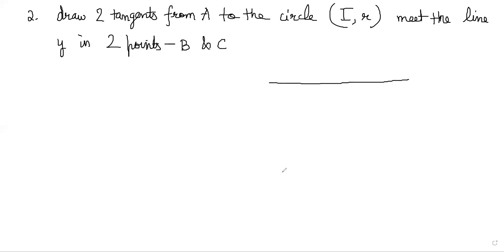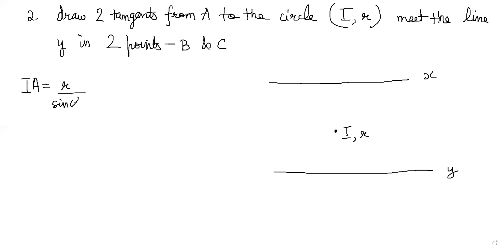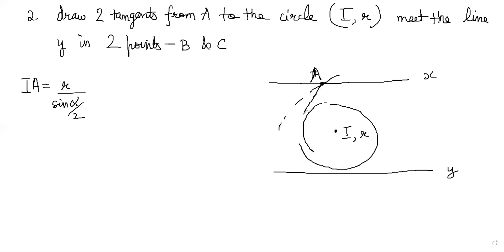So basically, I'll draw the figure again. Two parallel lines were given. One circle was given. You had to first find point A. What you do is: IR was given and alpha was given, so you construct IA as R divided by sine(alpha/2) and make a circle which cuts line X at some point. This becomes A. Once you have A, from A to the circle IR draw two tangents. They will meet line Y here and here. This becomes B and C. This ensures that angle A is alpha and that IR is the incircle of triangle ABC.